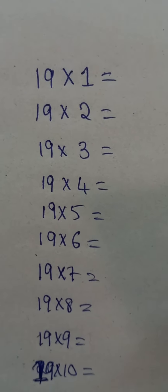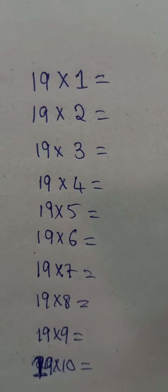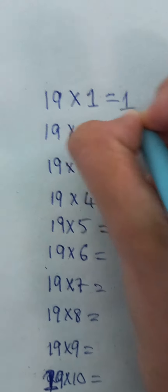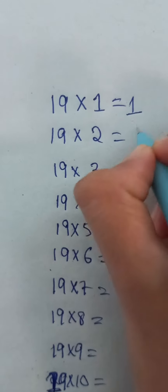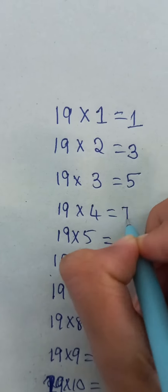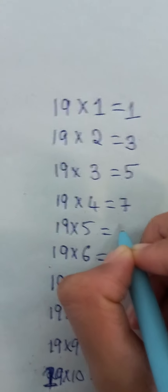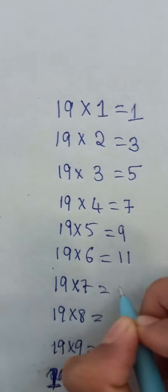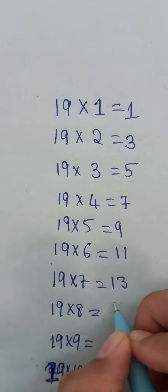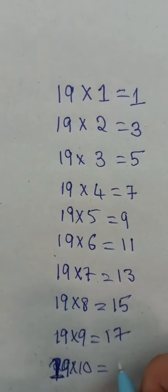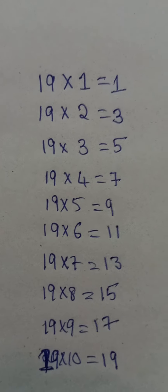Hello everyone, let us watch the 19 table trick. So first, write odd numbers: 1, 3, 5, 7, 9, 11, 13, 15, 17, 19.